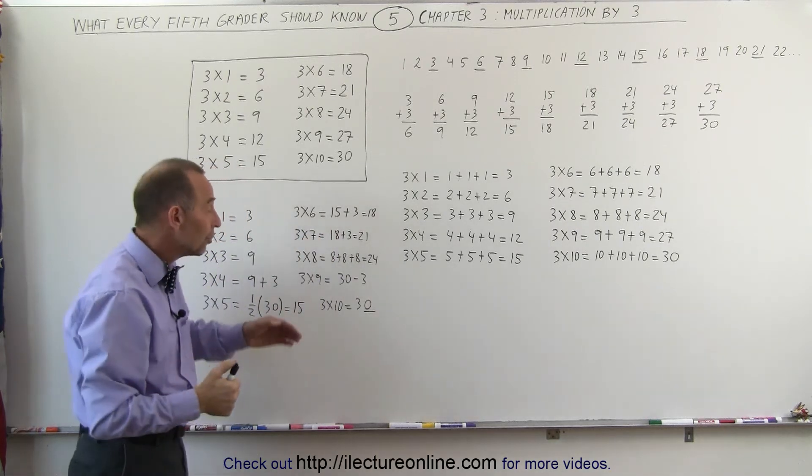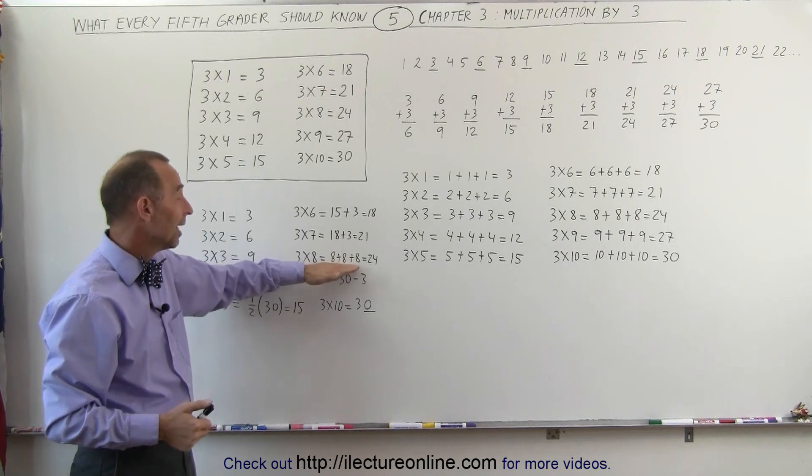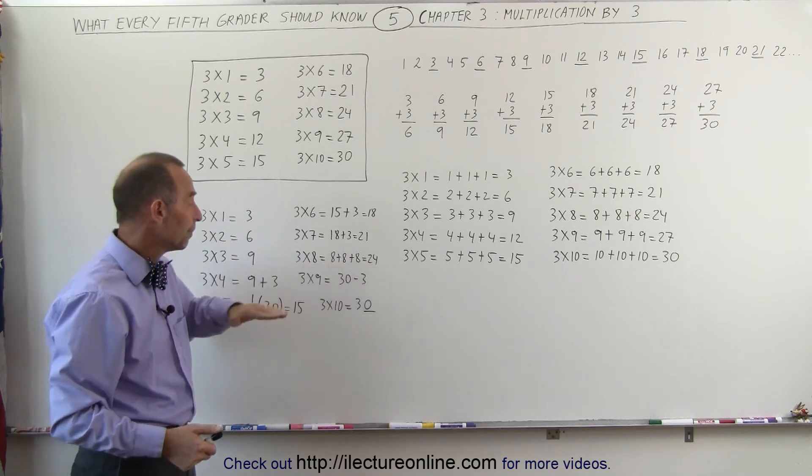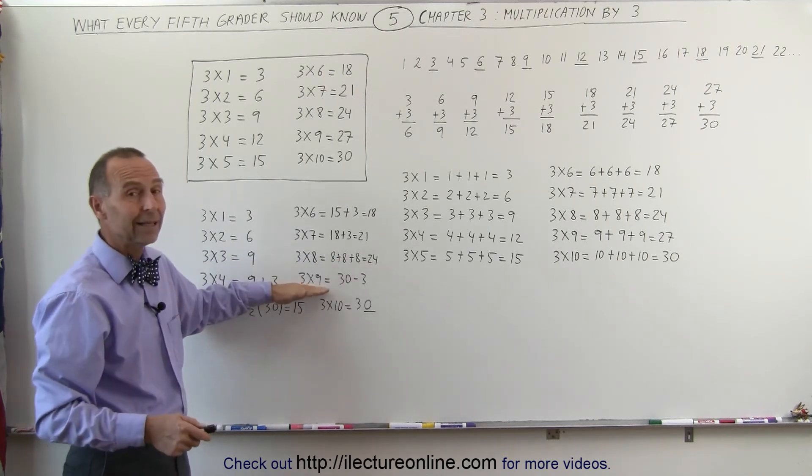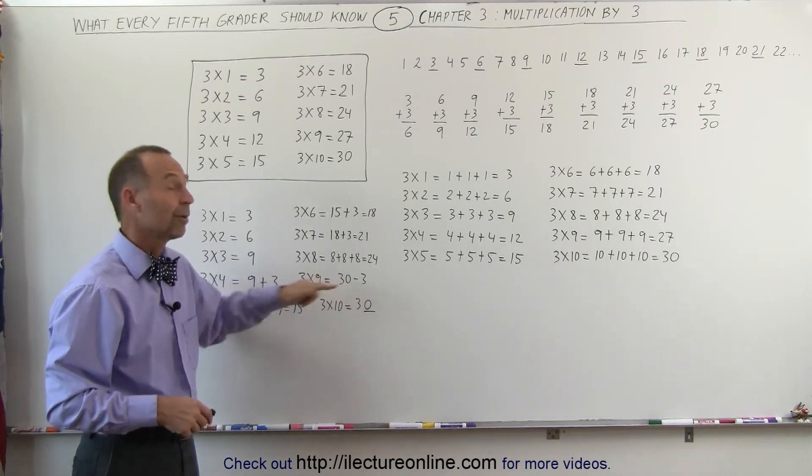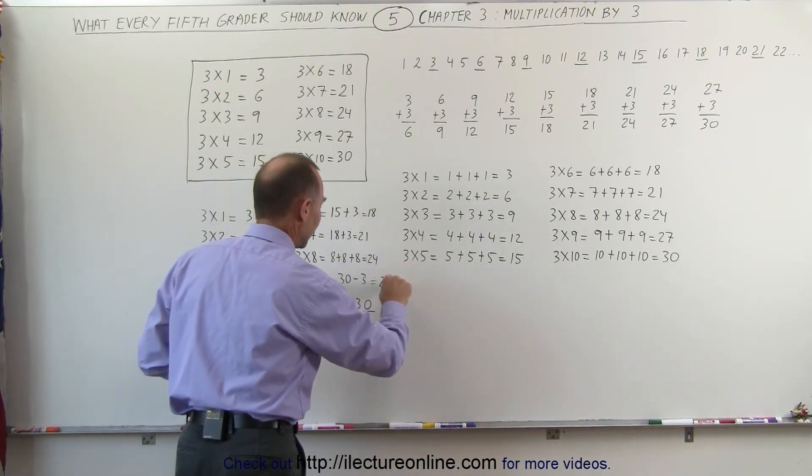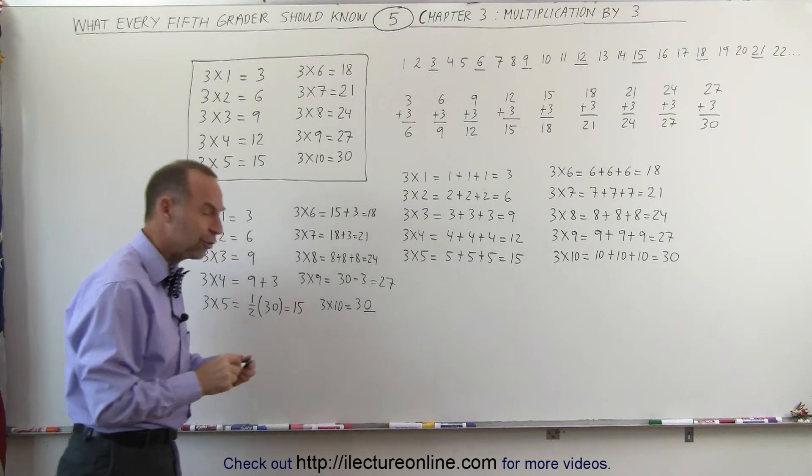And 3 times 8, you can look at it as adding 3 eights together, 8 plus 8 is 16, and another 8 you get 24. And 3 times 9 is 3 times 10 minus 3, so 3 times 10 is 30, subtract 3 from it, you get 27. And finally, 3 times 10 of course is 30.